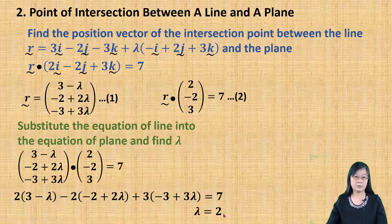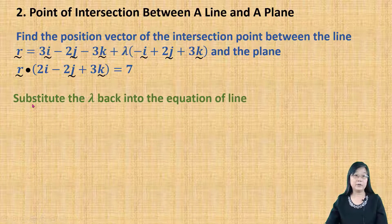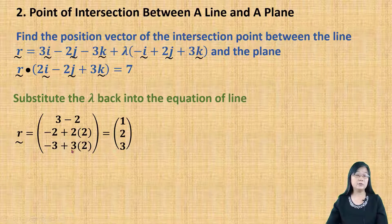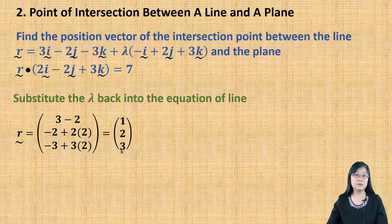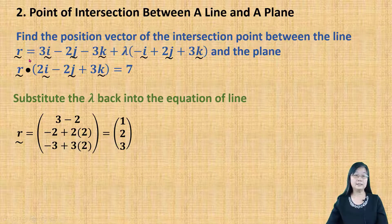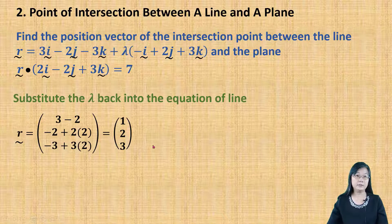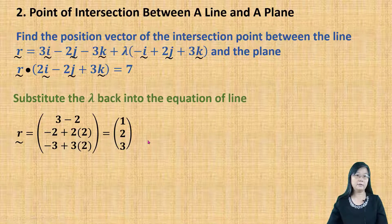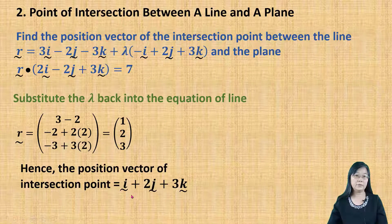Then, after that, I'm going to substitute λ back into the equation of the line. When I substitute λ back into the equation of line, I find that the position vector is (1, 2, 3). This is the position vector of the intersection point between the line and the plane. But because the equation given in the question is under IJ form, the position vector of the intersection point needs to be changed back into IJ form. Therefore, the position vector of the intersection point is i plus 2j plus 3k.